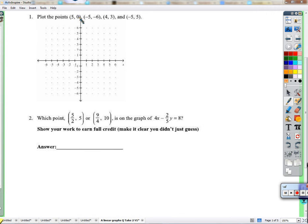So x is 5 and y is 0, so x is 5, y is 0. Negative 5, negative 6: 1, 2, 3, 4, 5 for the x. Negative 6 for the y, there's a point. 4, 3, negative 5, 5 right there.